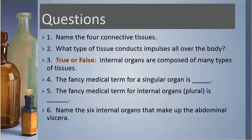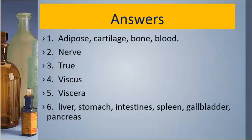Answers. Number one is adipose, cartilage, bone, blood. Number two is nerve. Number three is true. Number four is viscus. Number five is viscera. Number six: liver, stomach, intestines, spleen, gallbladder, pancreas.